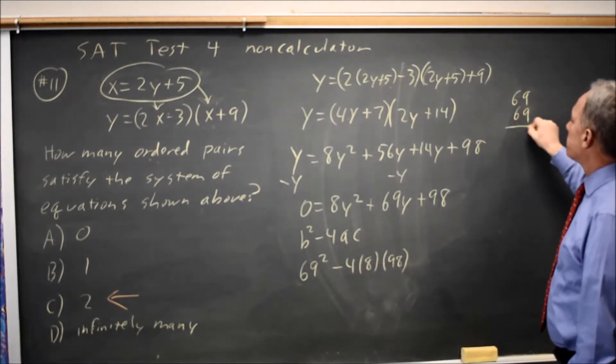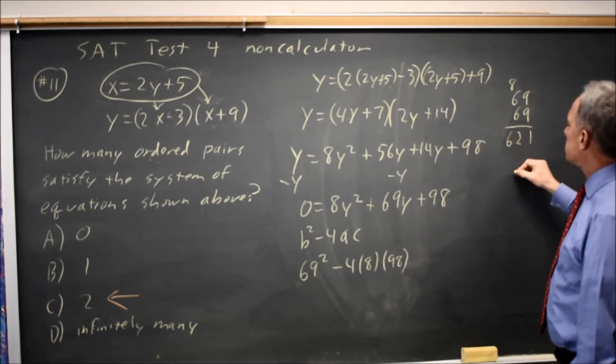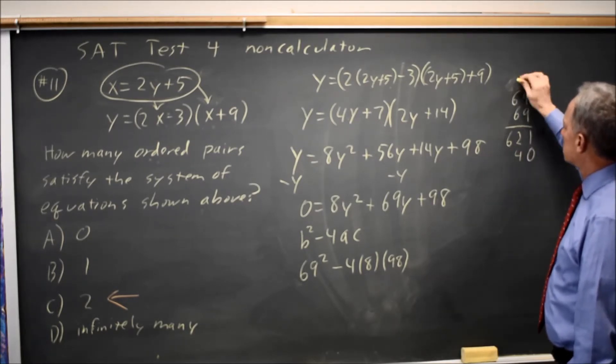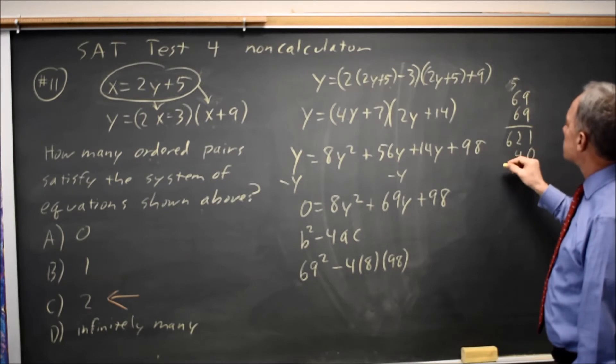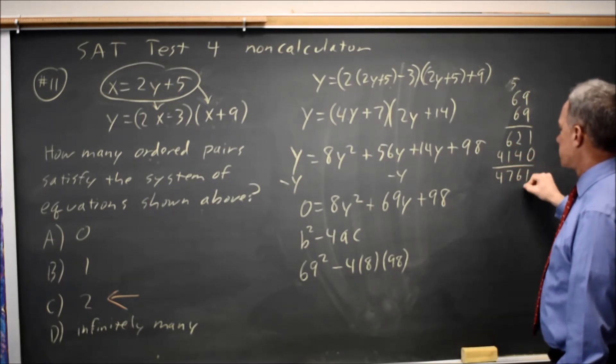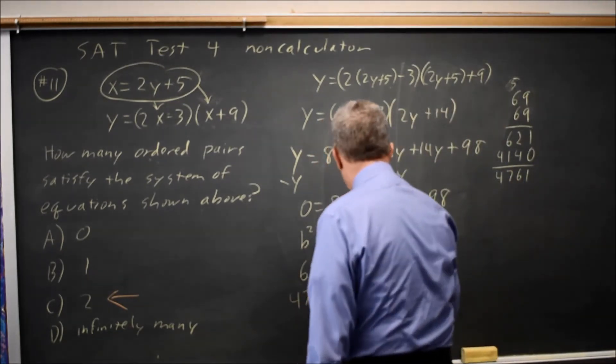69 times 69 is: 9 times 6 is 54, and 8 would be 62. 6 times 9 is 54. 6 times 6 is 36, and 5 is 41. 4, 7, 6, 1.